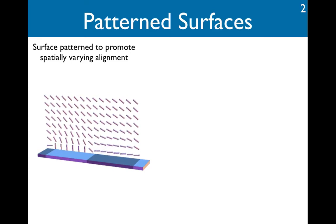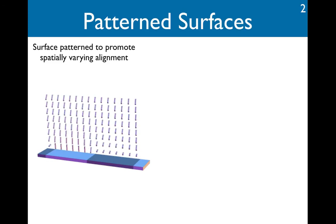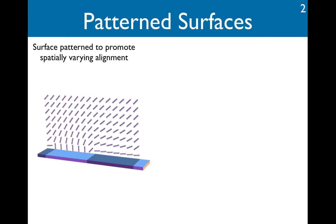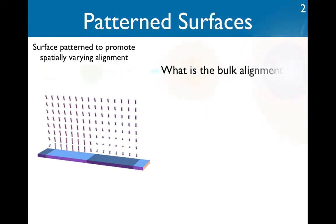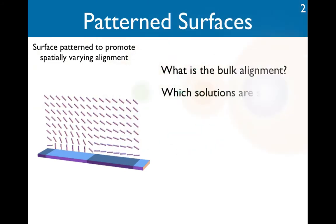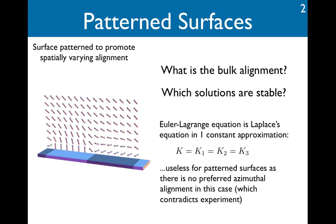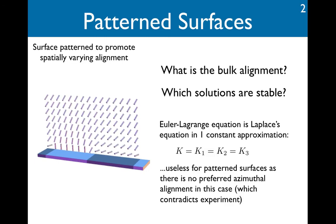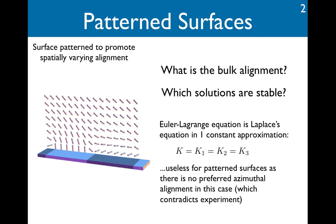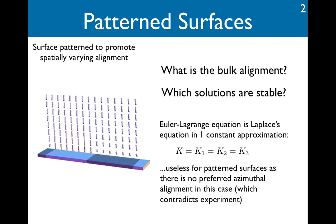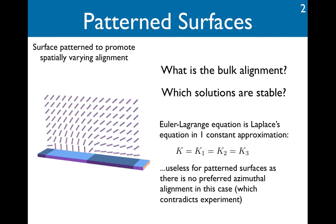Presented with such a situation, two questions that theoretical physicists must answer are: what is the bulk alignment, and secondly, which solutions are stable? A common approximation to do this is to assume that all of the elastic constants are equal. The Euler-Lagrange equation in this case is just Laplace's equation. Unfortunately, this simplification is useless for patterned surfaces because you don't get the observed alignment. The alignment is due to elastic anisotropy.